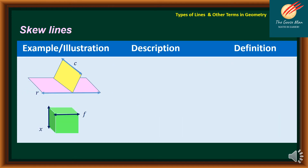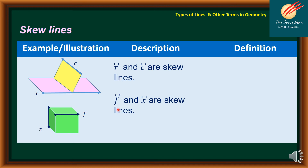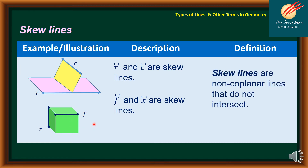Let's move on to skew lines. Based on our illustration on the left side, line R and line C are skew lines because they do not intersect and belong to two different planes. Line F and line X are also skew lines because they are not lying on the same plane. Skew lines are non-coplanar lines that do not intersect.